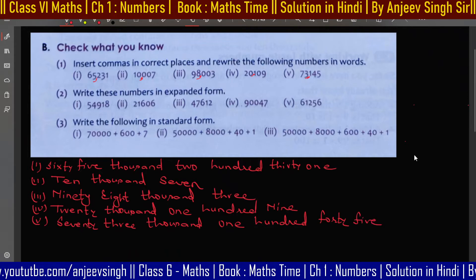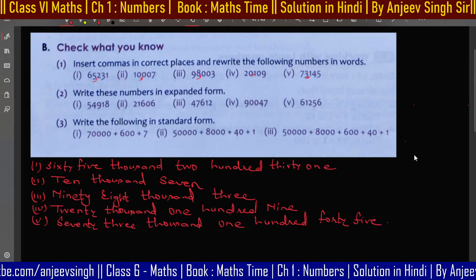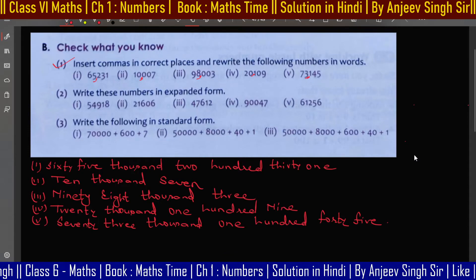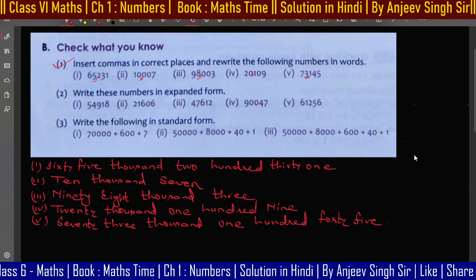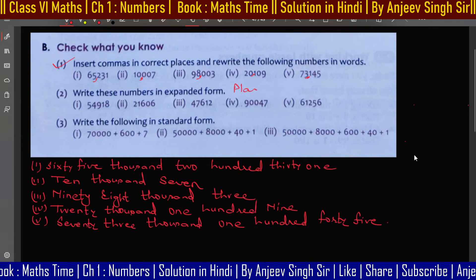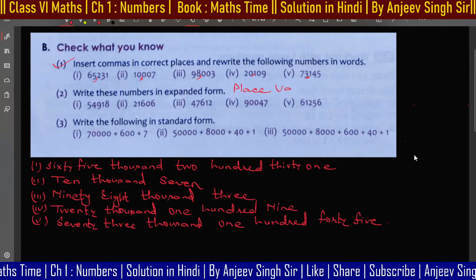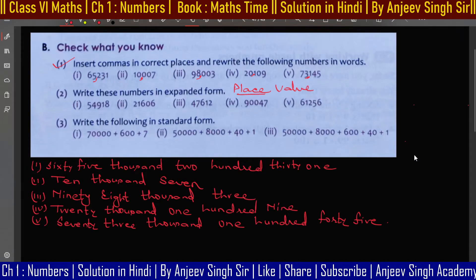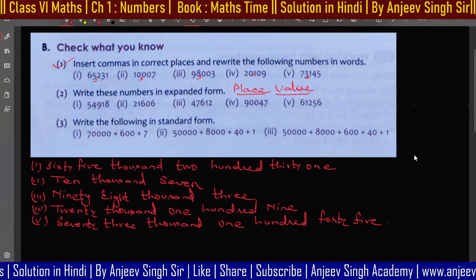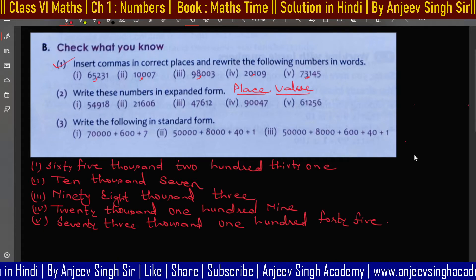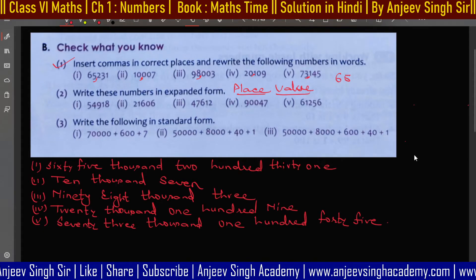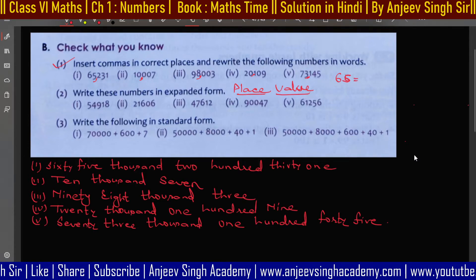So this way you can solve question number 1. Now move to the next question: write this number in expanded form. You need to write the place value concept clearly. If you know the expanded form, you know the place value, and if you know the place value, you can calculate it.